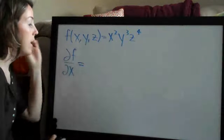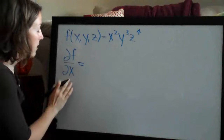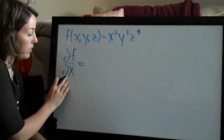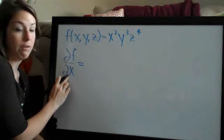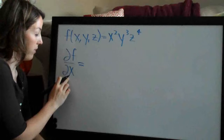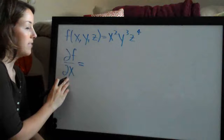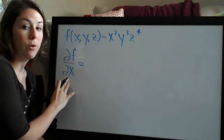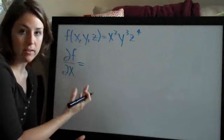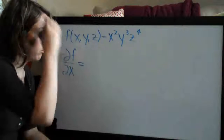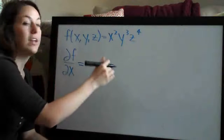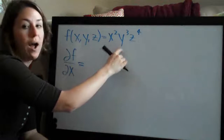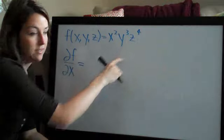When we take the partial derivative with respect to x, we'll then take the partial derivative with respect to y, then with respect to z.